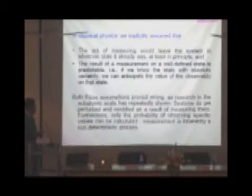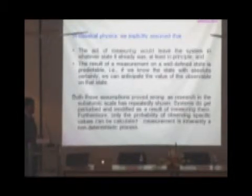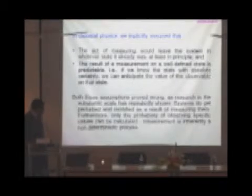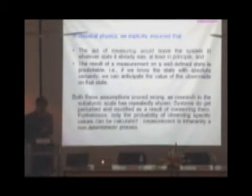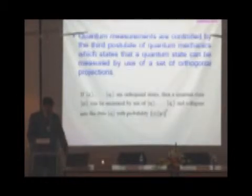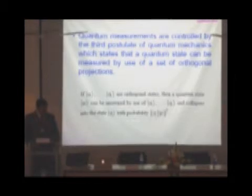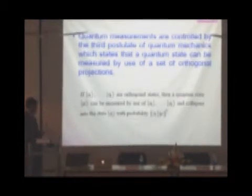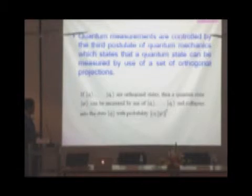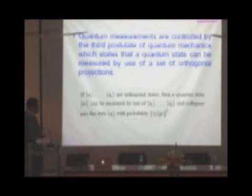Both these classical assumptions have been proved wrong, as research in the subatomic regime has specifically shown. Systems do get perturbed and modified as a result of measuring them. Furthermore, only the probabilities of observing specific values can be calculated. Measurement is inherently a non-deterministic process. Quantum measurements are controlled by the third postulate of quantum mechanics, which states that a quantum state can be measured by use of a set of orthogonal projections. If |ψ1>, |ψ2>, ..., |ψk> are orthogonal states, then a quantum state |ψ> collapses into |ψi> with probability given by |<ψi|ψ>|².